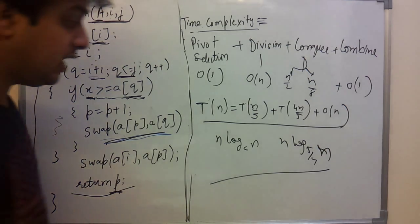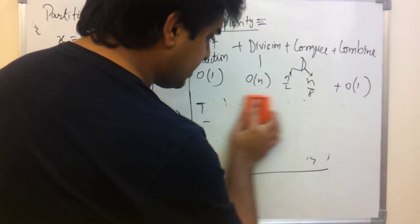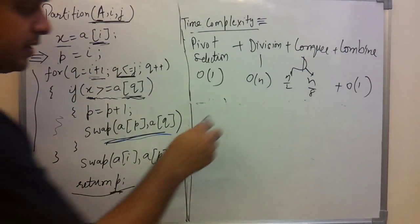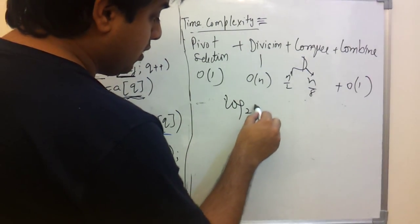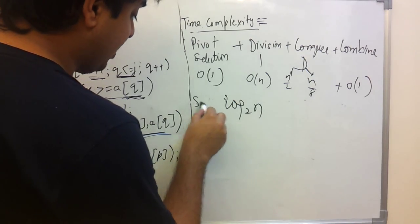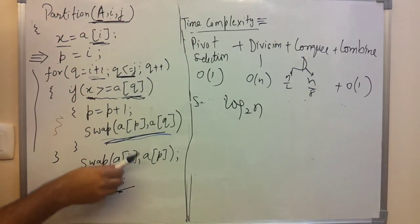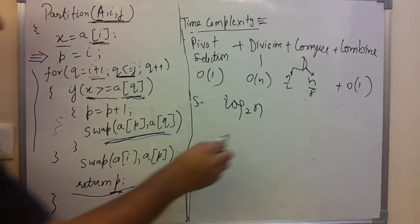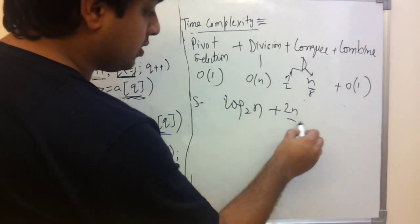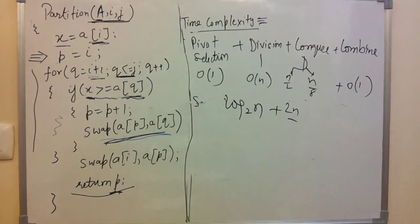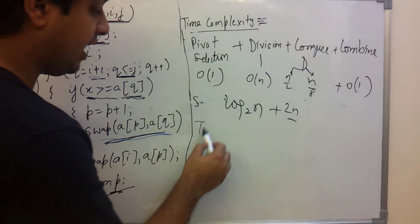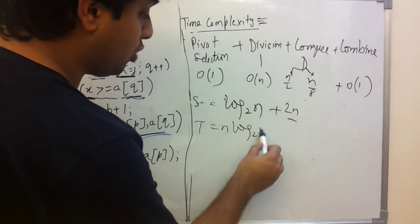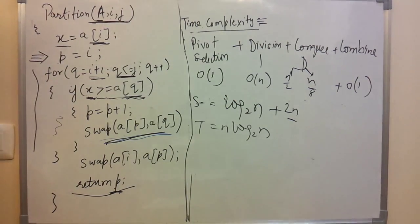Space complexity uses the call stack. We have to account for the stack space used by recursive calls. Each element on the stack takes space, plus some additional space — say 2n space which we have initialized. So time complexity is O(n log n) and space complexity is O(log n + 2n), simplified to O(n).